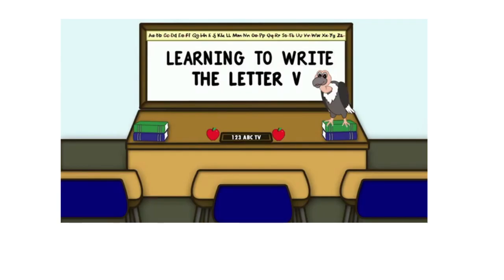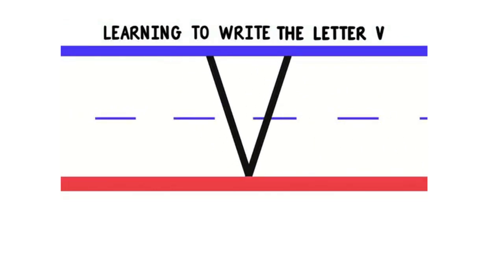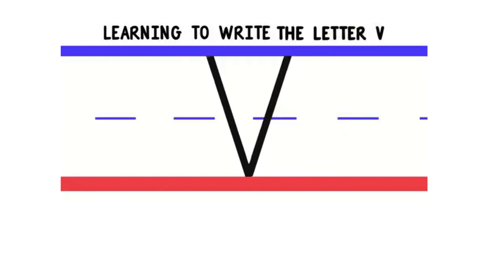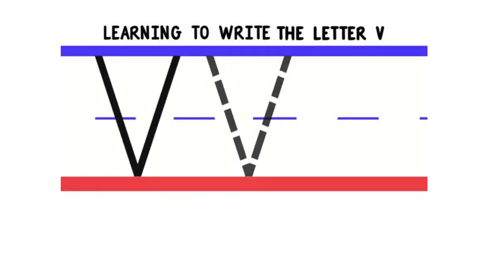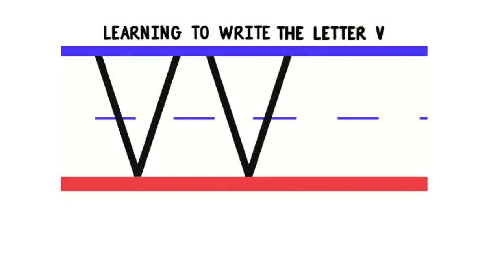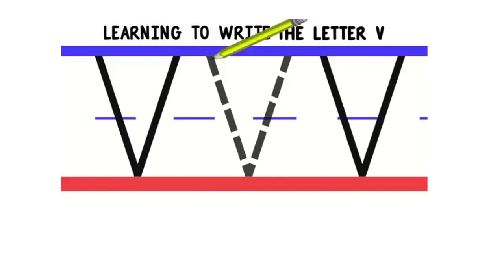Can you name other words that begin with V? V as in vulture. We'll start with uppercase or big V. To write uppercase V, we'll start at the top and do a diagonal line down. Then we'll do a diagonal line back up. Good job! Let's do that again. We'll start at the top and do a diagonal line down. Then we'll do a diagonal line back up.